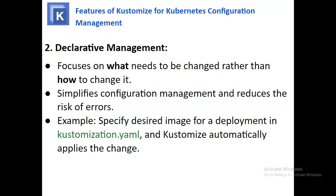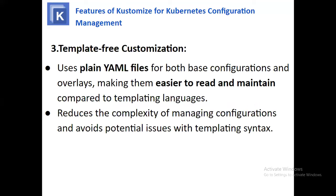The next feature is declarative management. This focuses on what needs to be changed rather than how to change it. It simplifies configuration management and reduces the risk of errors. For example, you specify the desired image for a deployment in the customization.yaml file and Kustomize automatically applies the changes.